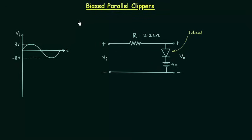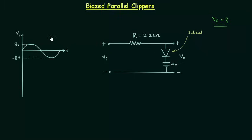Let's solve one problem based on a biased parallel clipper. In this problem we have to calculate the output voltage V0, and once we have the value of output voltage, we have to plot the output waveform. The input waveform given in the problem is sinusoidal in nature, and Vm, the maximum or peak voltage, is equal to 8 volts.